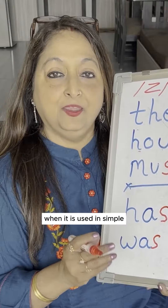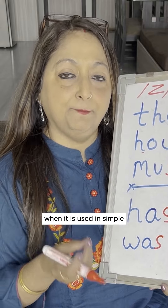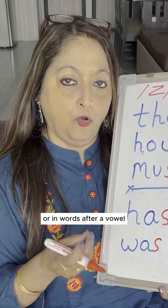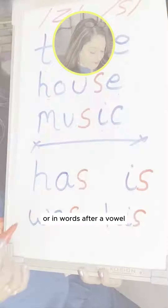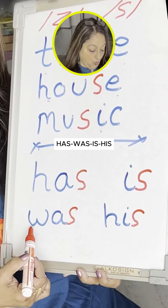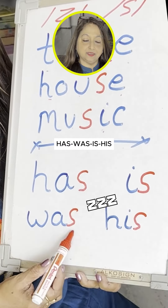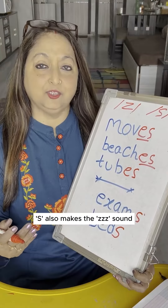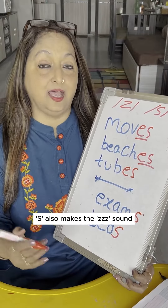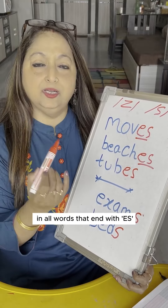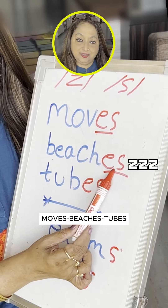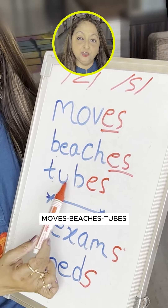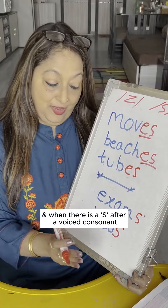S also makes the /z/ sound when it is used in simple functional words or in words after a vowel: has, was, is, his. S also makes the /z/ sound in all words that end with -es: moves, beaches, tubes.